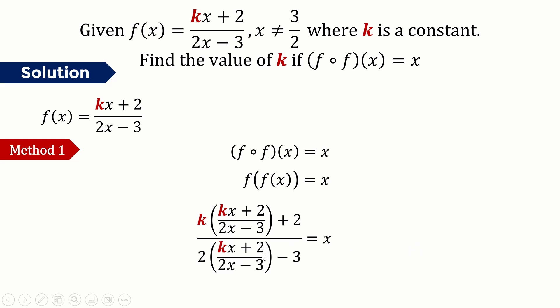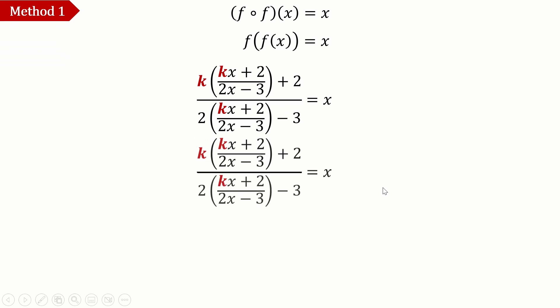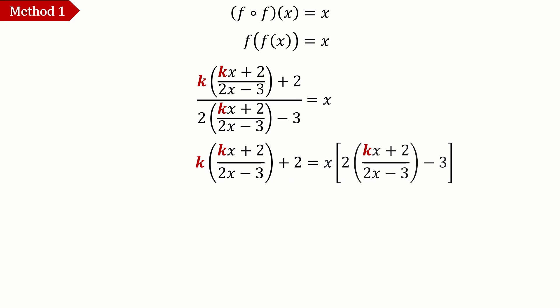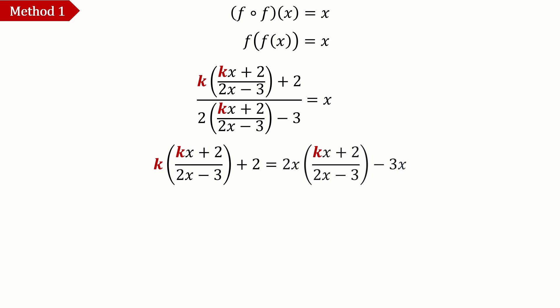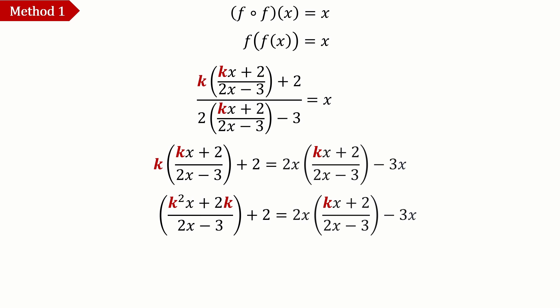We can simplify this equation to solve for k. First, we multiply both sides by the denominator, and then simplify the right-hand side, which becomes 2x times (kx + 2)/(2x - 3) minus 3x. We can expand the left-hand side to get that expression.